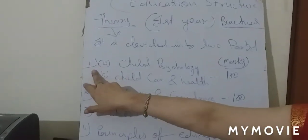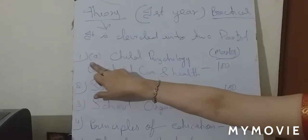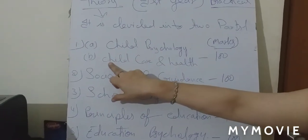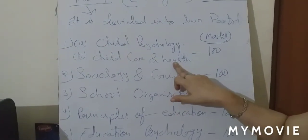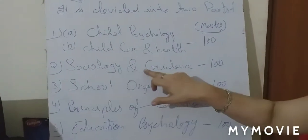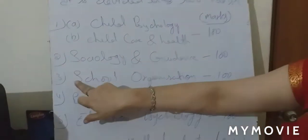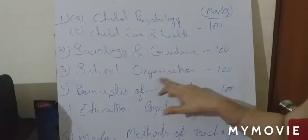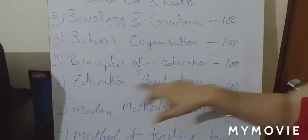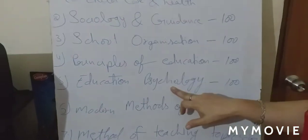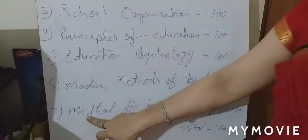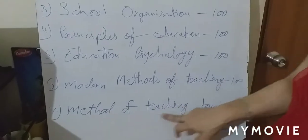First paper mein aapki do parts hain: child psychology aur child health. Second hai aapka sociology and guidance. Third hai aapka school organization. Fourth hai principles of education. Fifth hai educational psychology. Sixth hai modern methods of teaching. Seventh hai method of teaching topics.